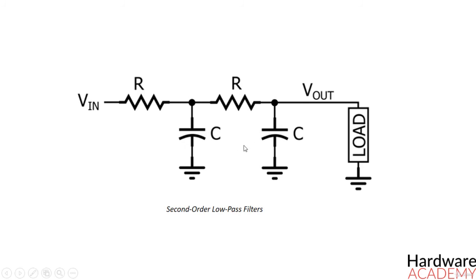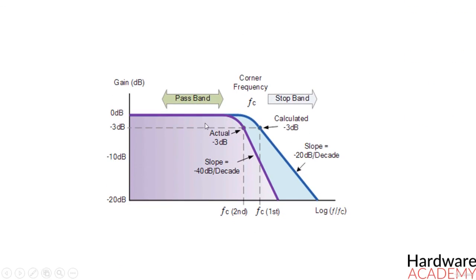We can create a second-order RC low-pass filter by designing a first-order filter according to the desired cutoff frequency and then connecting two of these first-order stages in series. What you have to remember is that a second-order filter will have a steeper roll-off — in the case of a second-order filter, this will be a maximum of 40 dB per decade, instead of 20 dB per decade as in a first-order low-pass filter.